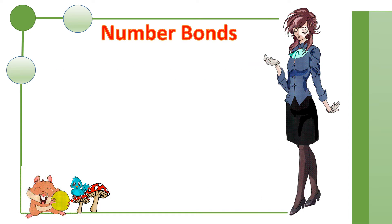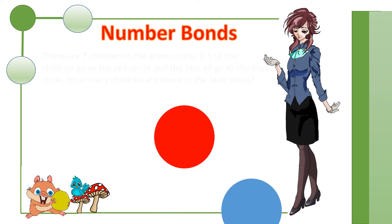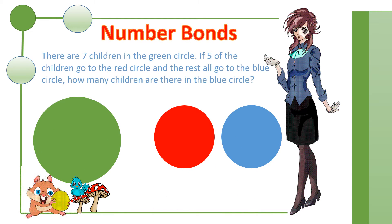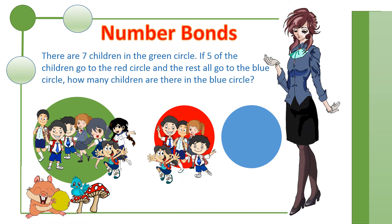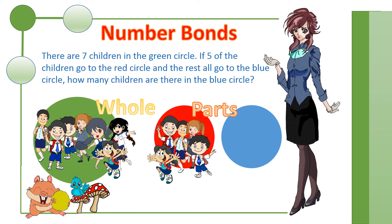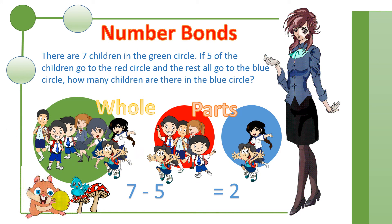Let's look into another example. Again, we are using the same circles. There are seven children in the green circle. If five of the children go to the red circle and the rest go to the blue circle, how many children are there in the blue circle? The green circle is still referred to as a whole. The red and blue circles are referred to as parts, because the green circle has the total number of children for both the red and blue circles. Since five of the children are going to the red circle, the remaining children will be going to the blue circle, and there will be seven minus five equals two. Therefore, two children will be in the blue circle.